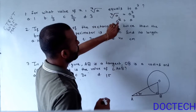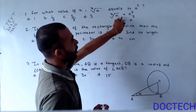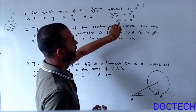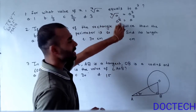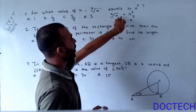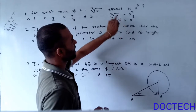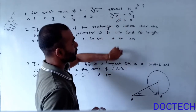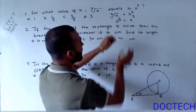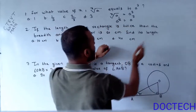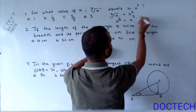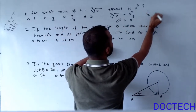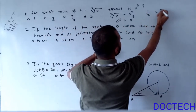x root a can be written as a to the power 1 by x. So, x root a written as a to the power 1 by x equals a cube, meaning the power 1 by x equals 3.